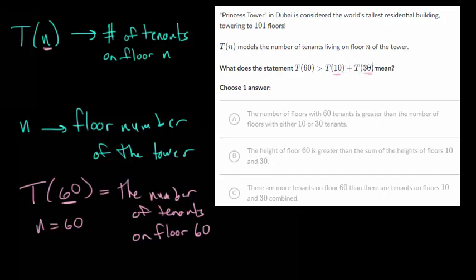And T of 30, this is floor number 30 and the number of tenants on that floor. So what this means is that the number of tenants on floor 60 is bigger than the number of tenants on floor 10 plus the number of tenants on floor 30. So we need to figure out which of these matches up with that.